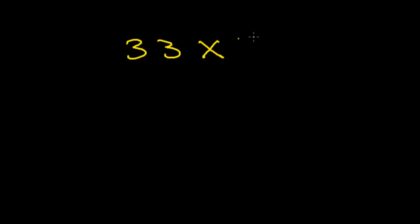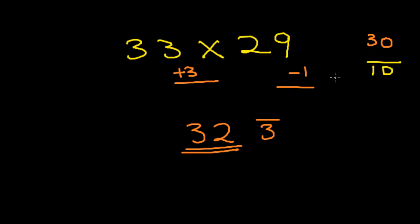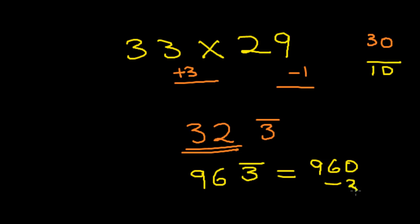One final example: 33 × 29. We take the base 30. When we subtract each number from the base we get plus 3 (since 33 minus 30 is plus 3), and 29 minus 30 is minus 1. We multiply these two digits: 3 × minus 1 gives minus 3, so we put a bar over the 3. Next we add 33 and minus 1 to get 32. Now we multiply 32 by 3, because our real base is 10 and 30 is 3 times 10. 32 × 3 gives 96. So we have 96 with a bar-3 appended: 960 minus 3 equals 957. That's the answer.